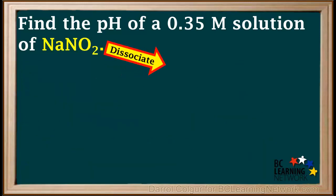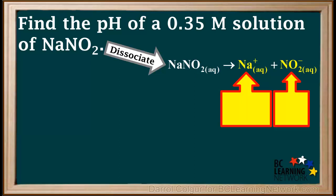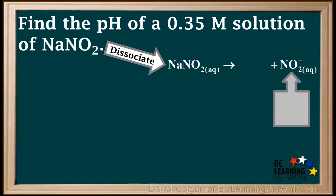Because NaNO2 is a salt, we'll start by dissociating it into its individual ions, which are Na⁺ and NO2⁻. Na⁺ is an alkali metal cation, so it's a neutral spectator and we can discard it. In order to determine what NO2⁻ acts as, we look for it on the acid table.